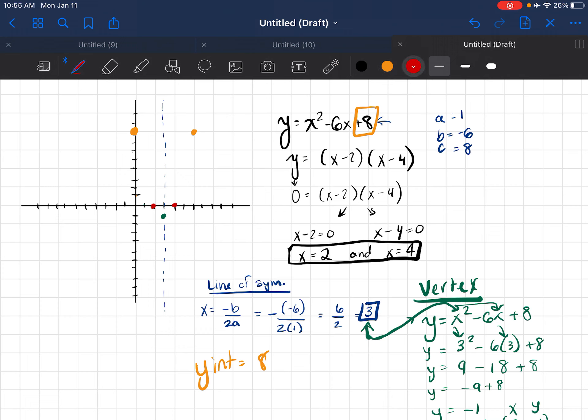My last step is to identify if this parabola is going to open up or down. And because the a term is positive, it's going to open up. And I can work to sketch my parabola. And there we go. This is the graph of y equals x squared minus 6x plus 8.